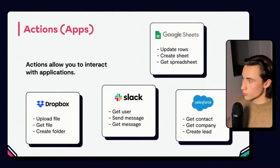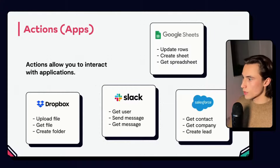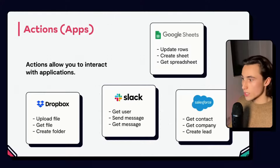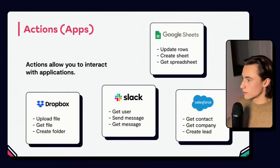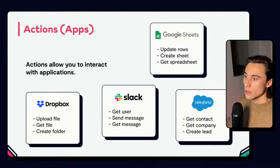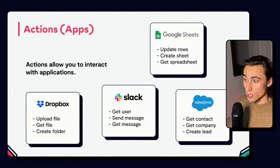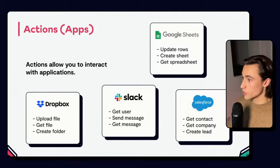Another important thing to understand is actions or apps. Actions allow you to interact with applications on the web, and this is what you're going to be using most of the time when building automation. For example, with Google Sheets you might want to update rows, create a sheet, or get a spreadsheet. With Dropbox, you can upload a file, get a file, create a folder, or move a file from one folder to another. With Slack, you can send a message, get a message, get a user, or get all messages from a specific channel. With Salesforce, which is a CRM, you can get a company, get a contact, create a lead, or associate a lead to a company. Every app is going to have a different set of actions that you can use for it.